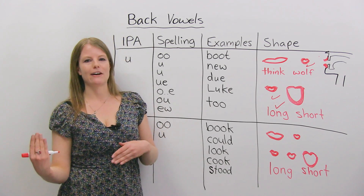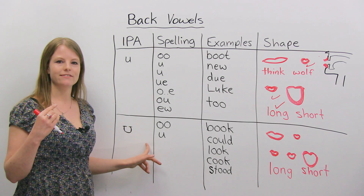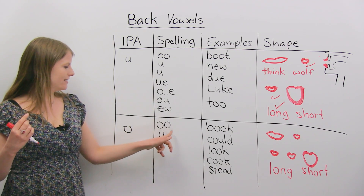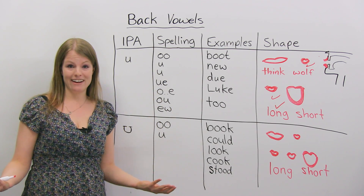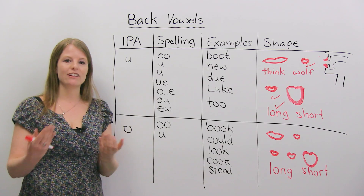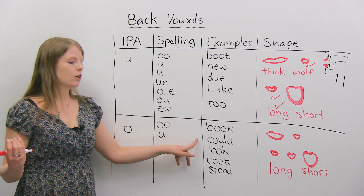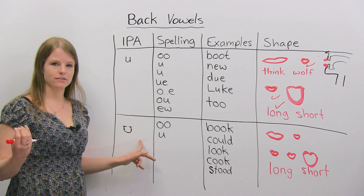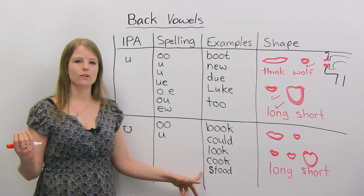The next sound is "uh". So we just did "oo" — and now "uh". This sound can be spelled with two O's or a U, just like the "oo" sound — they actually have the same spelling but are different sounds. If you're ever unsure, look in the dictionary for the IPA spelling and you will know which sound to use. Examples of this sound: book, could, look, cook, stood.